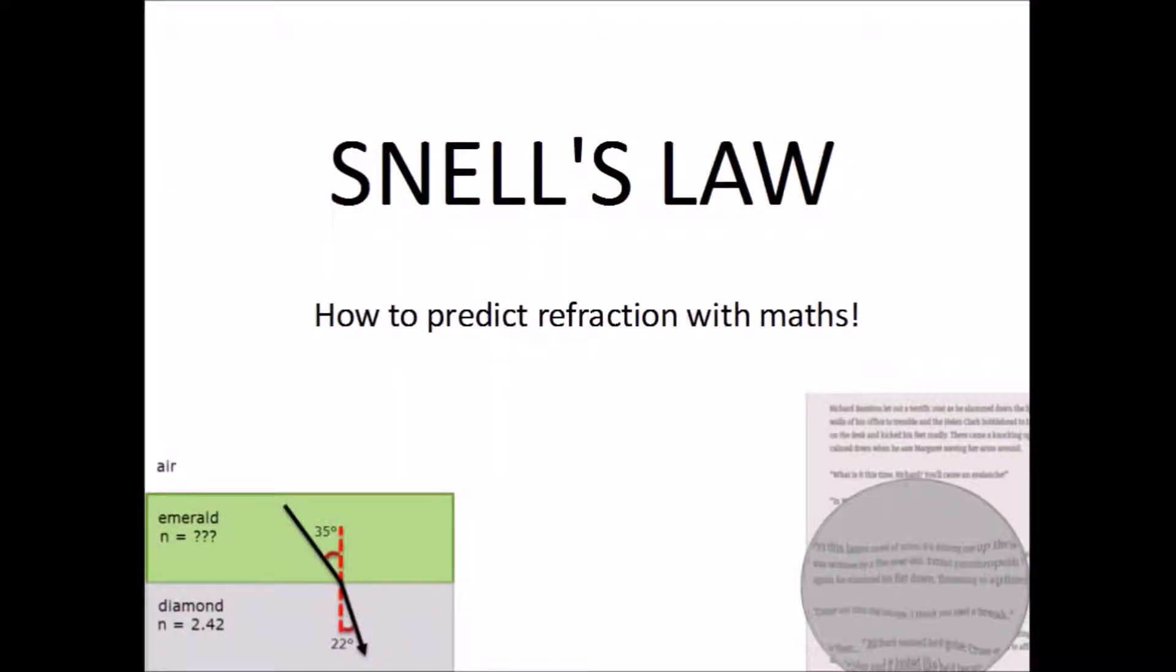Now you know that light refracts or bends when it passes through the interface between two media, for example the boundary between air and water. Question: how do we know how far the light bends if we know its angle of incidence? How can we predict the angle of refraction?